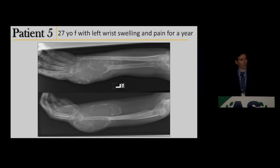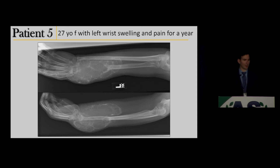Case 5: a 27-year-old female with progressive wrist swelling for quite a while. She was uninsured, kept delaying medical care, and then finally presented to one of our EDs and got this wrist series.